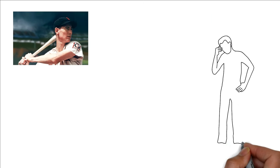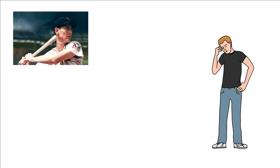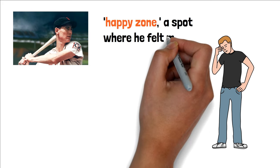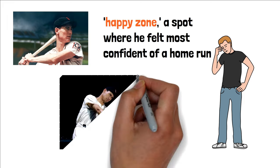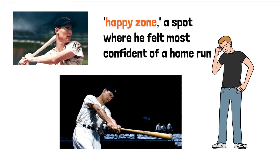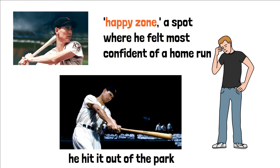Williams wasn't known for swinging at every pitch. Instead, he had a happy zone, a spot where he felt most confident of a home run. Whenever the ball ventured into this zone, Williams swung with vigor, and more often than not, he hit it out of the park.